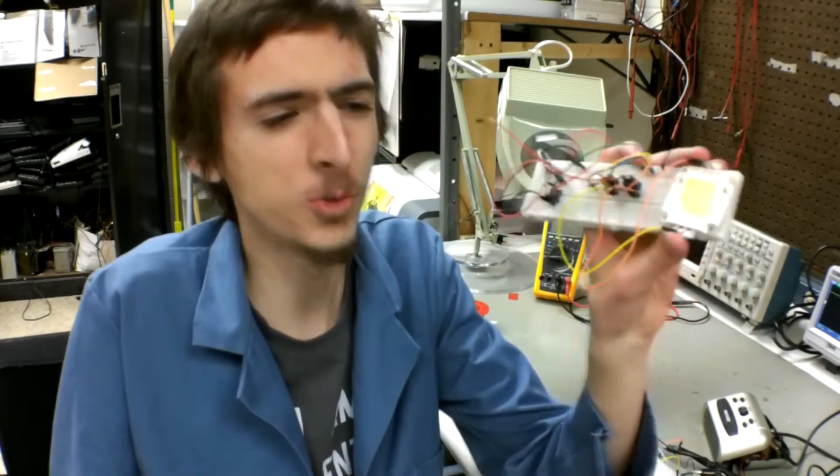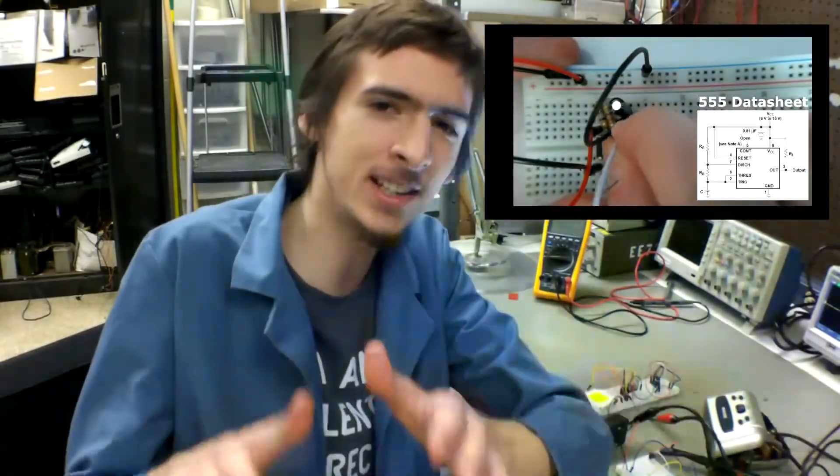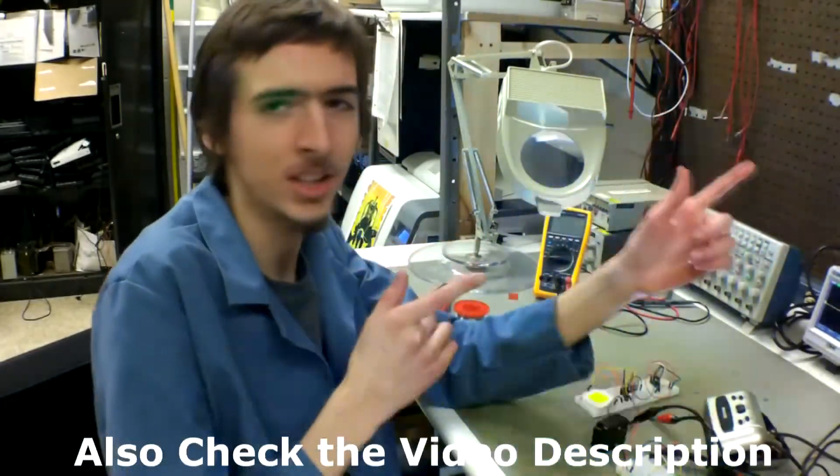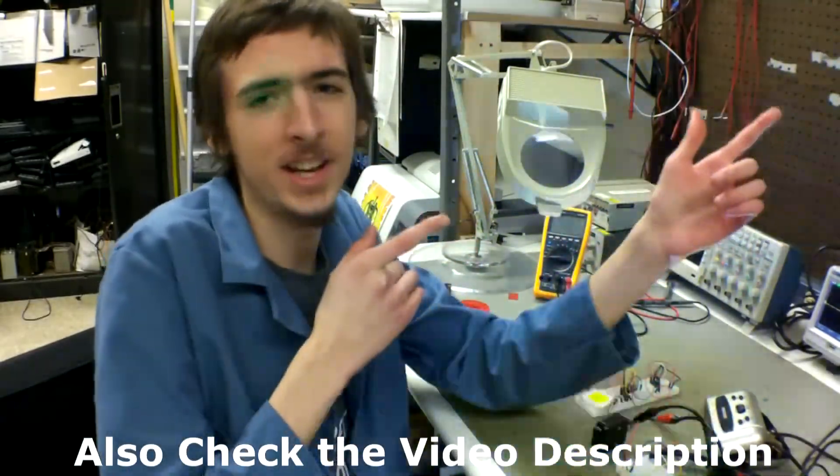Also while we're at it, why not hook up the strobe light I made in my previous video? Because when my ears are bleeding, I want to have a seizure too. If you want to learn how this strobe light works, please check out my other video where I do a very in-depth explanation of this strobe light circuit. The link to that video should be up here somewhere. I don't know, I haven't finished editing yet.